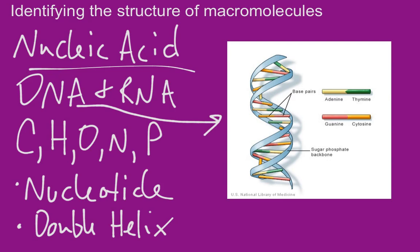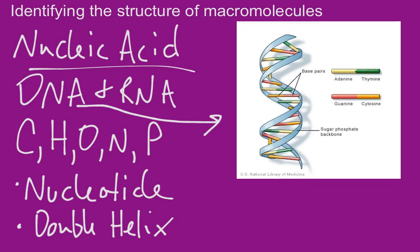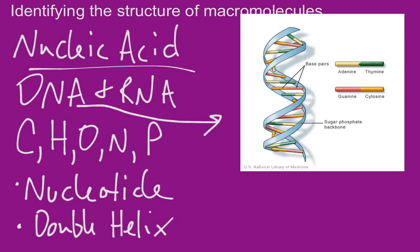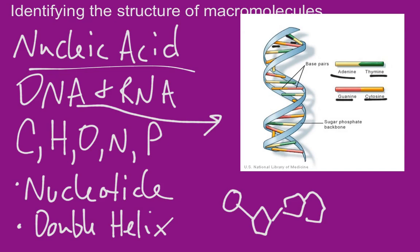We also might see the classic double helix shape of DNA, which looks like a ladder that has been twisted and is made up of nucleotides. Each nucleotide has three basic parts: a phosphate group, a five-carbon sugar, and a nitrogenous base. The pieces in the middle — shown in green, yellow, red, and orange — are the nitrogenous bases: adenine pairs with thymine, and guanine pairs with cytosine. If you see that twisted ladder shape, you know that's DNA and a nucleic acid.